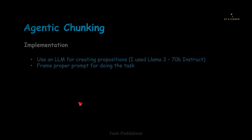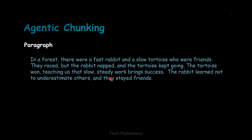Let's look at the paragraph we are going to work on. Here we have a set of statements — in a forest, a fast rabbit and a slow tortoise who were friends. This is the first sentence. The second sentence starts with 'they raced.' Here the pronoun 'they' is used. If you separate this sentence from the previous one, it is difficult for the machine to identify to whom we are addressing. So this second statement is not a proposition — it is not an independent statement through which we can get the idea of the completeness of the statement.